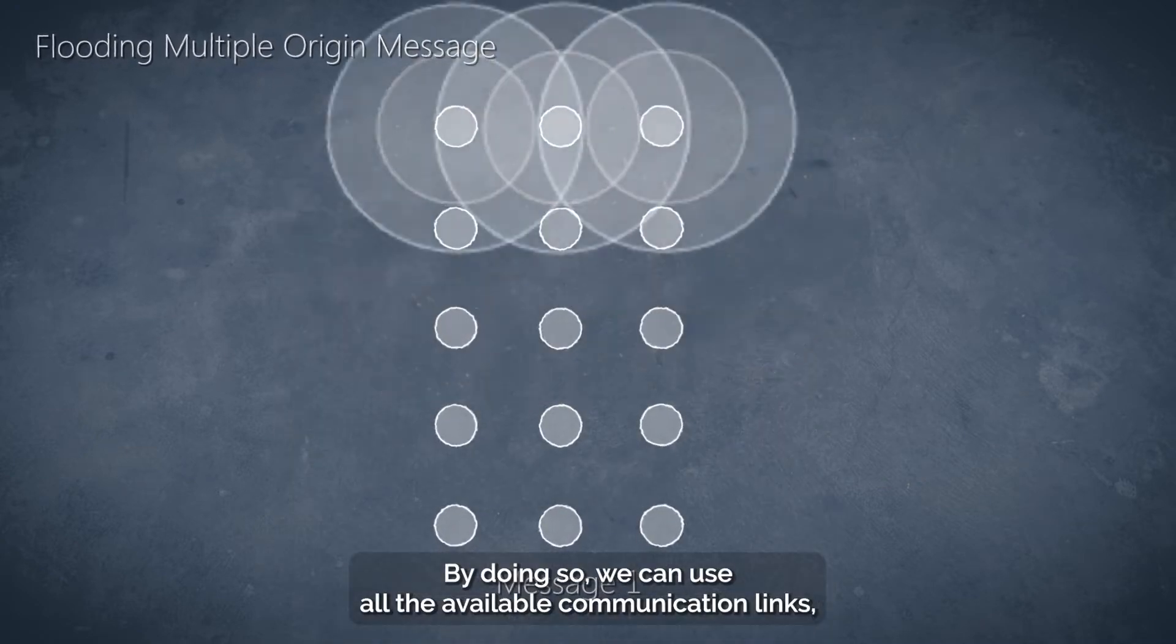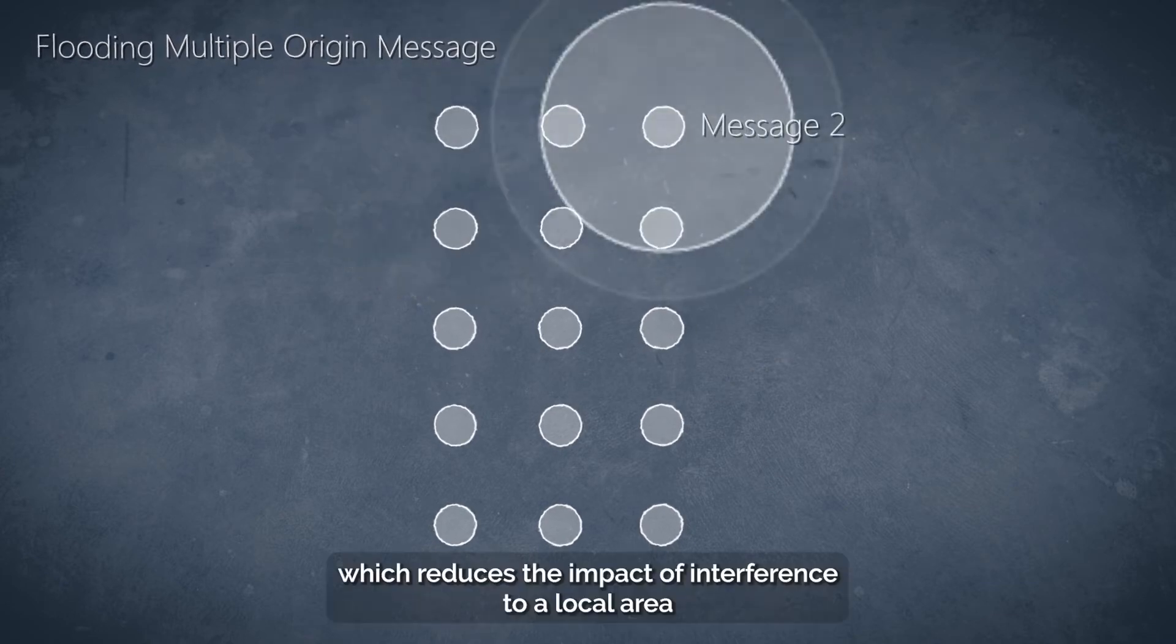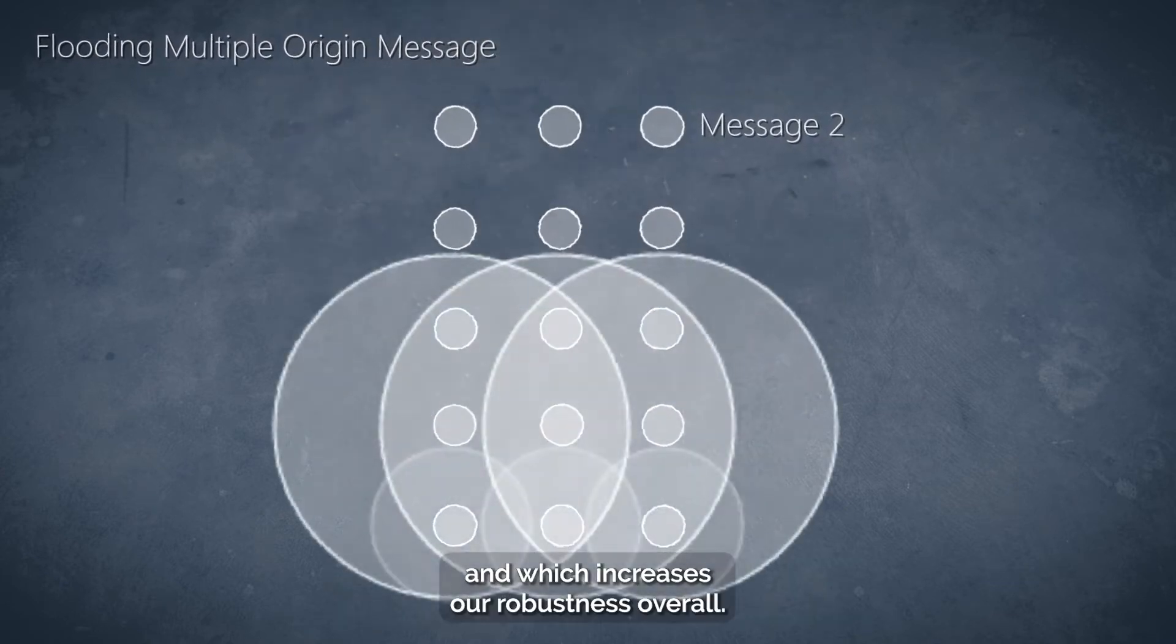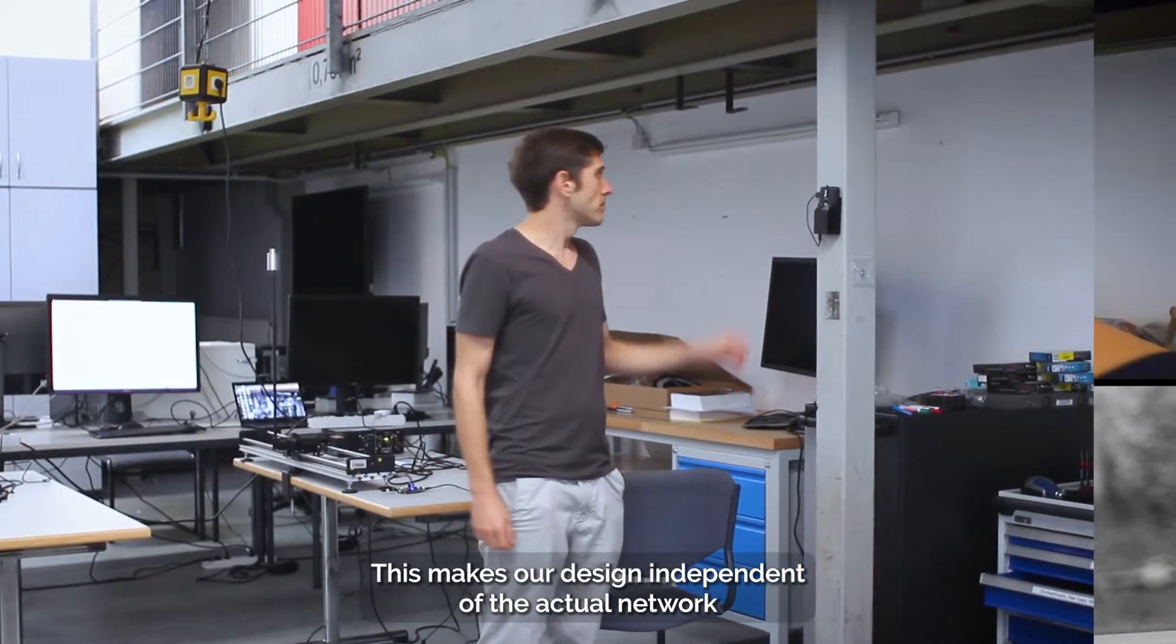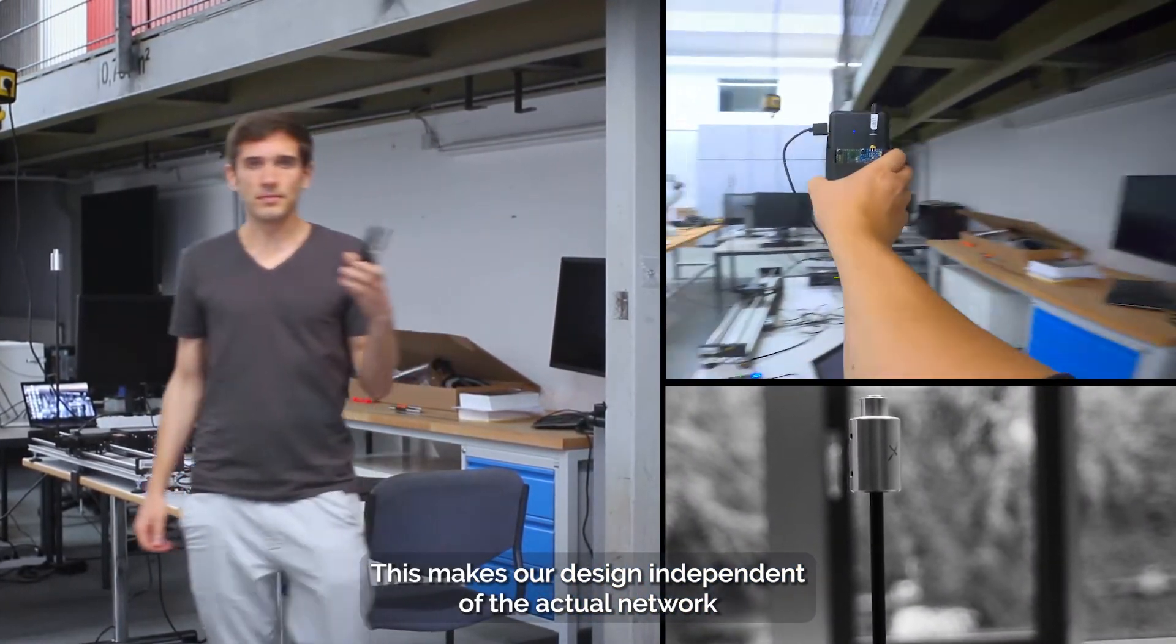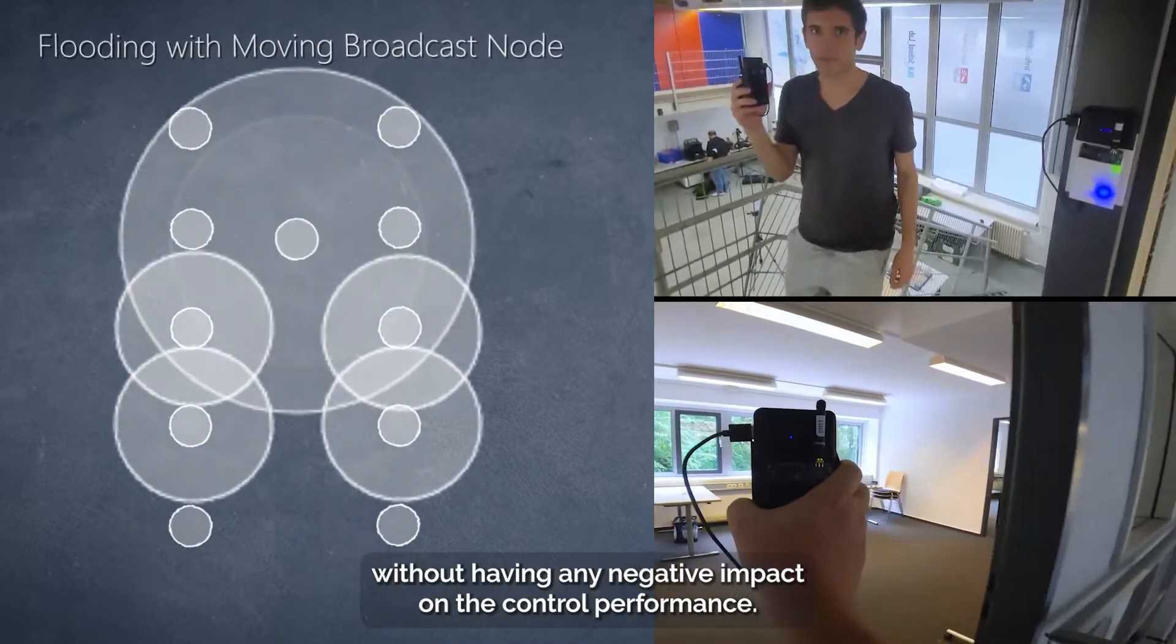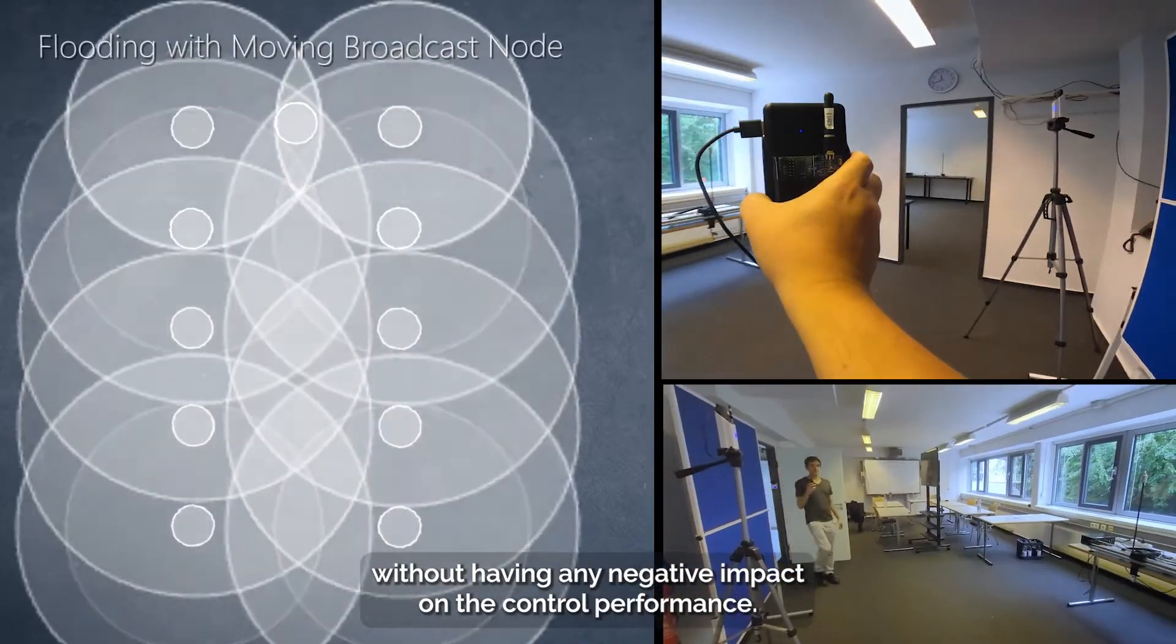By doing so, we can use all the available communication links, which reduces the impact of interference to a local area and which increases our robustness overall. This makes our design independent of the actual network topology, which enables nodes to move around freely without having any negative impact on the control performance.